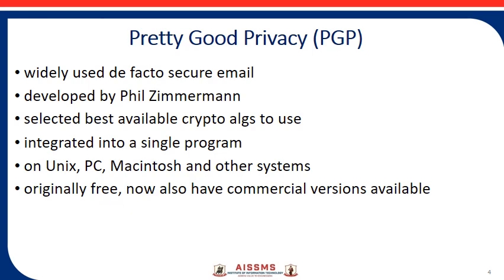PGP uses a digital signature, which is a combination of hashing and public key encryption, to provide integrity, authentication, and non-repudiation. It mostly uses a combination of secret key encryption and public key encryption to provide privacy. Therefore, a digital signature uses one hash function, one secret key, and two private-public key pairs. PGP is an open-source and freely available software package for email security.